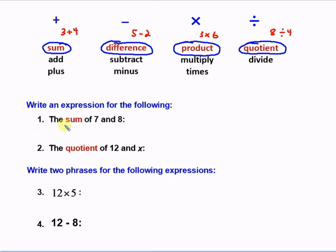So let's look at these examples. The sum of 7 and 8. So the sum means addition. So we would have 7 plus 8. That is the sum of 7 and 8. Then we read the quotient of 12 and x. Let's look up here to find quotient. Quotient means division. So 12 divided by x is the quotient of 12 and x.